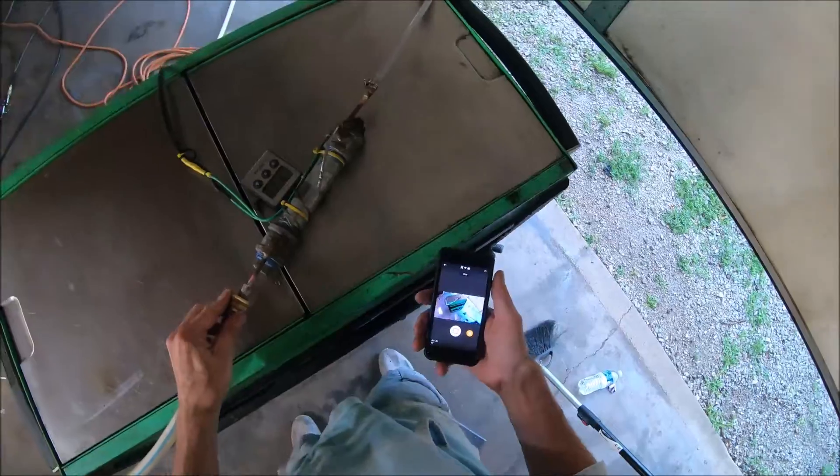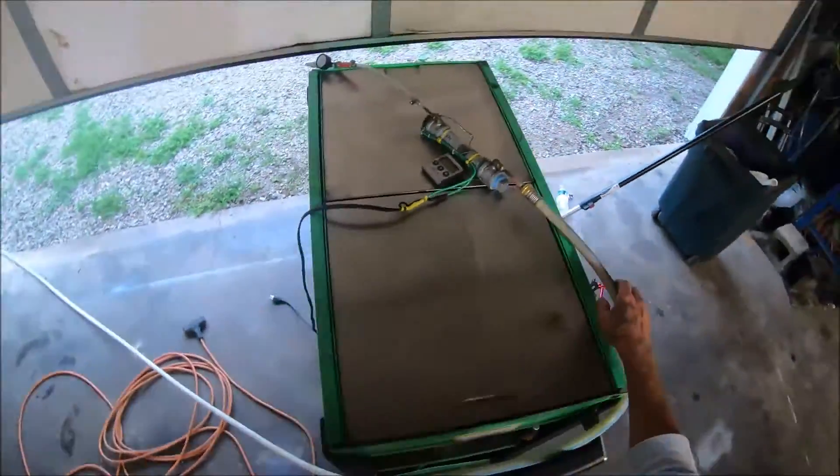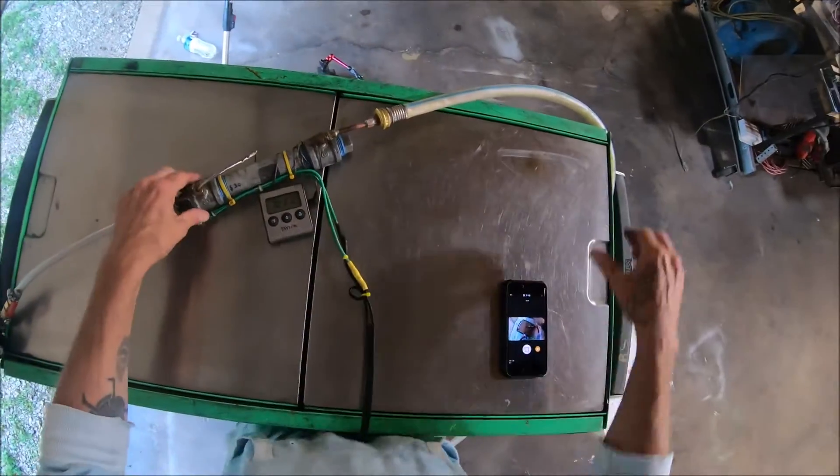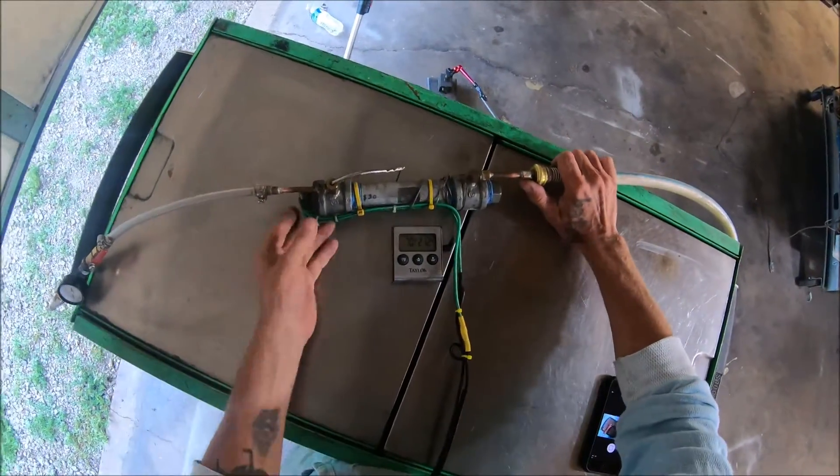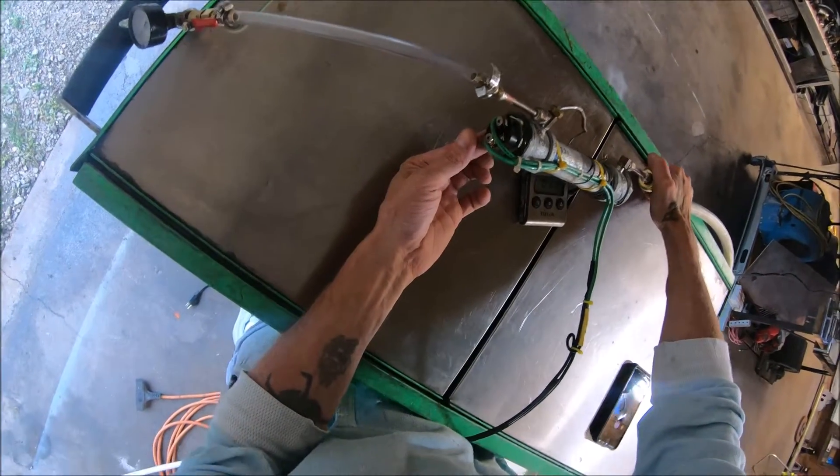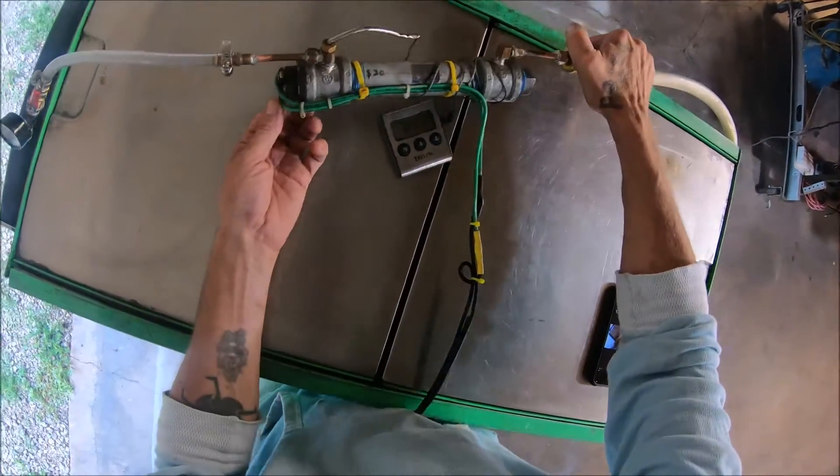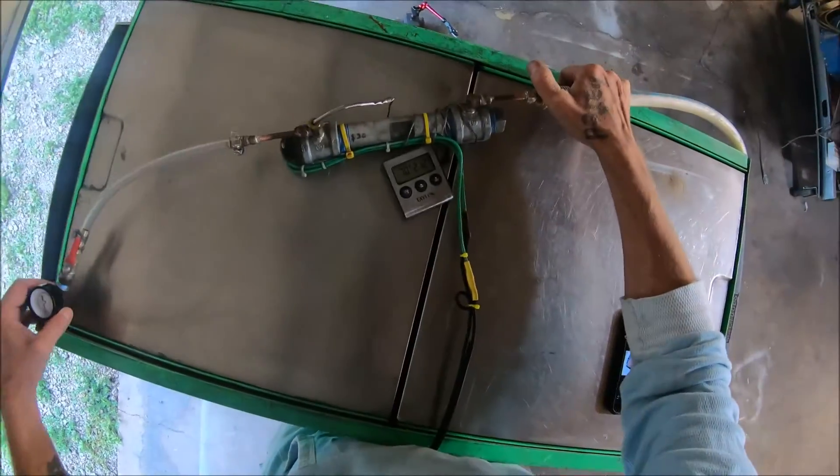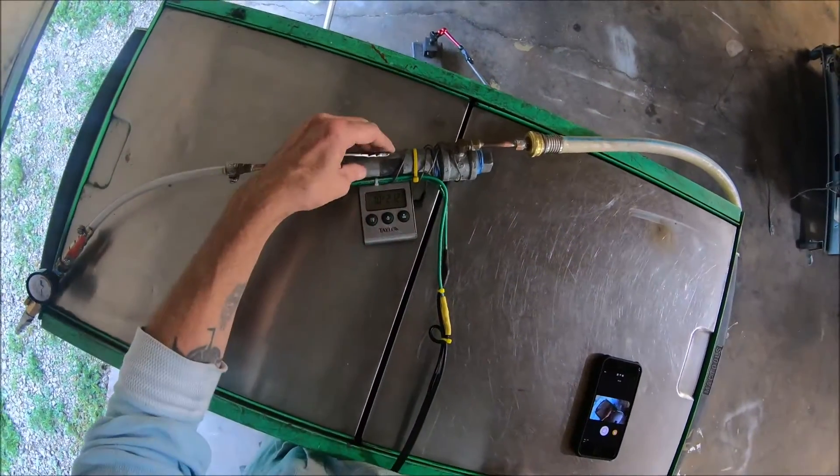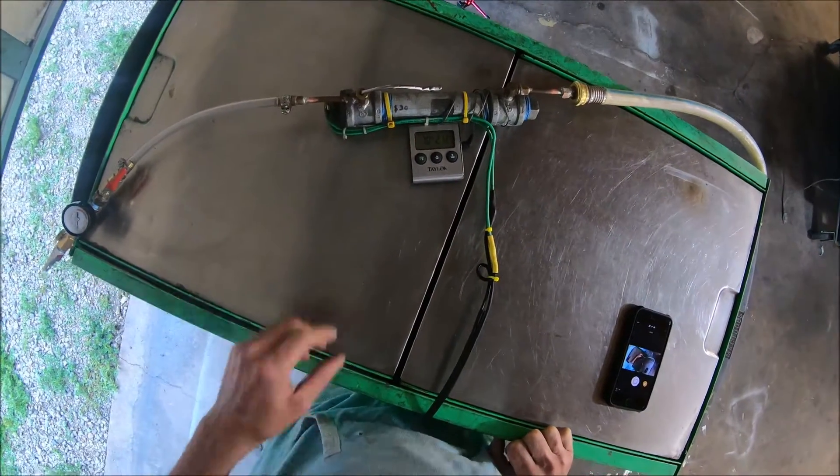We're going to be using that today to run this little bad boy right here, which is essentially just a heating element for a hot water heater in your house - a 2000 watt element that's hooked inside these pieces of steel pipe here. This is an inline heater that I built for some waste oil burner projects years ago.